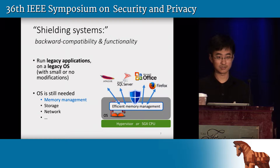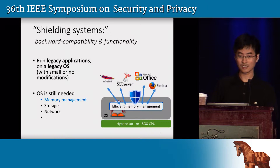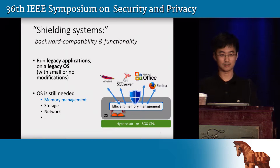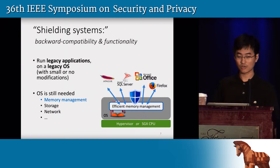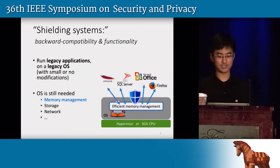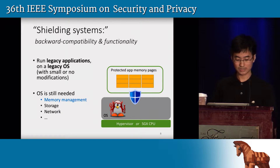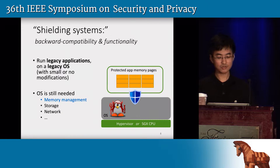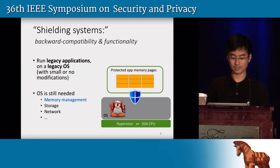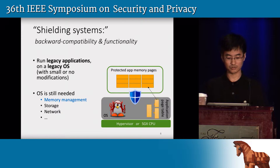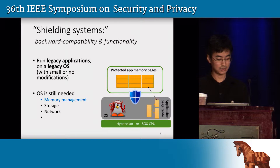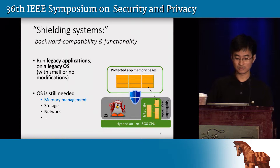The OS is not eliminated from the software stack. Instead, it's still needed for core functionalities such as resource management, because the OS is supposed to run many applications efficiently. In particular, with shielding systems, the OS is still responsible for memory management even for protected applications — managing the page tables of all protected applications. The shielding system will likely add some integrity checks on every page table update.